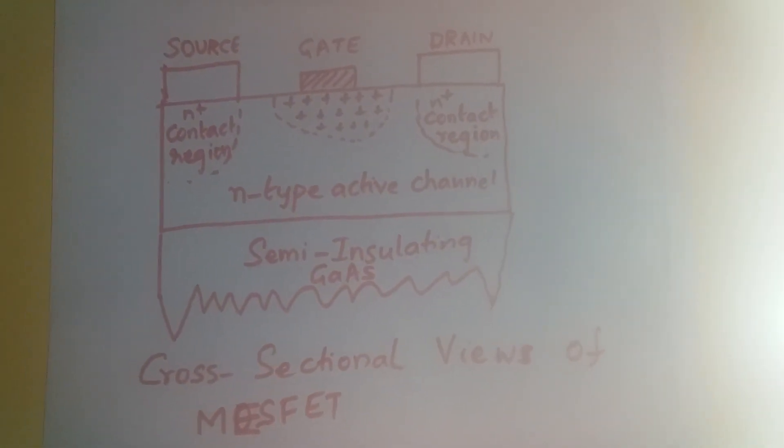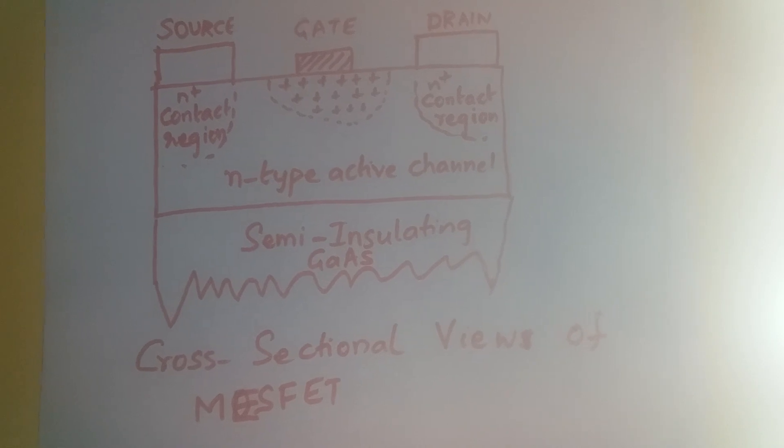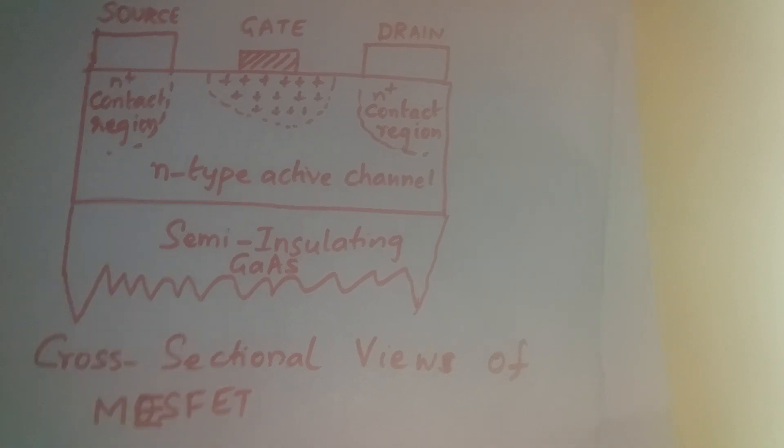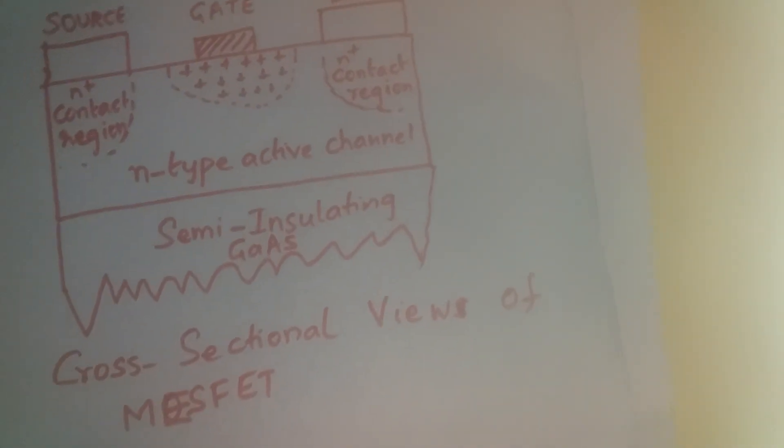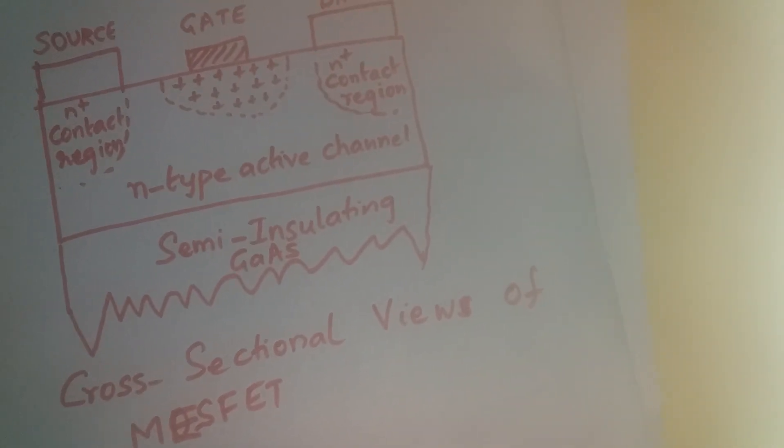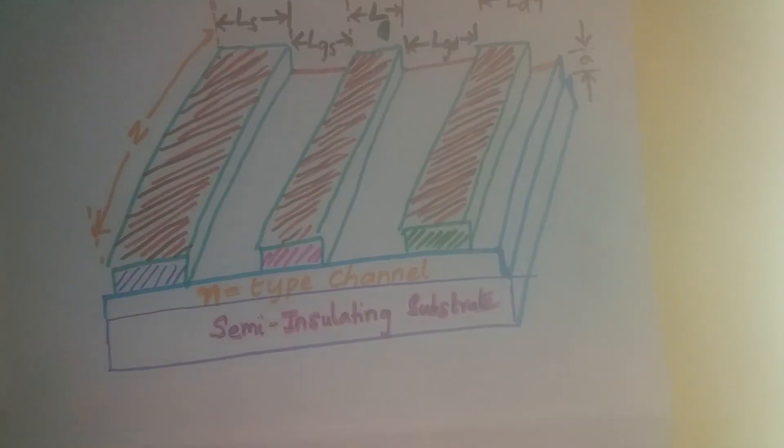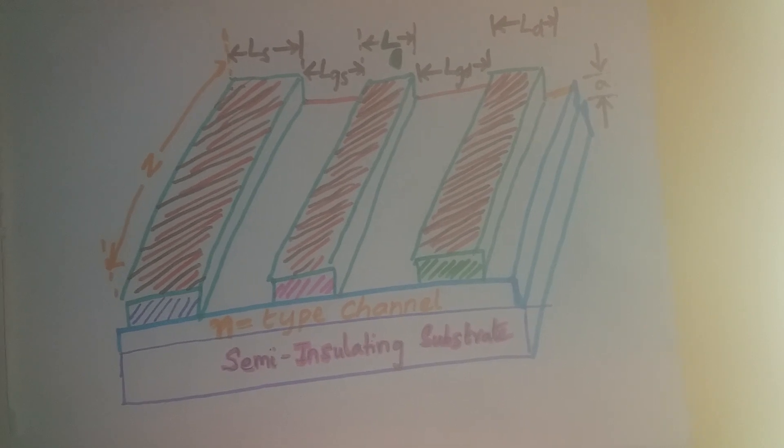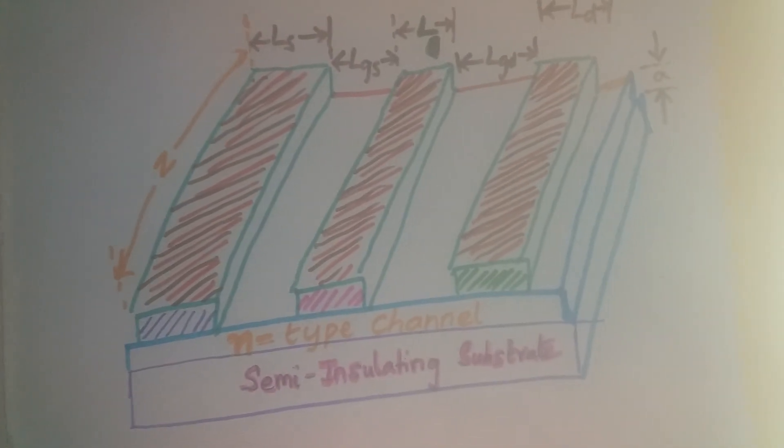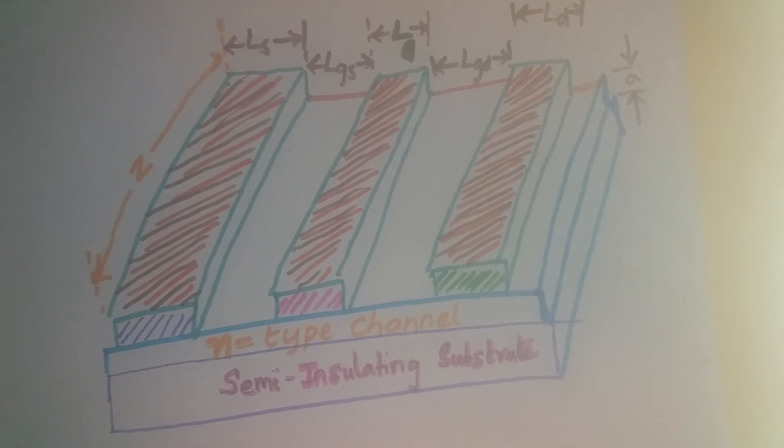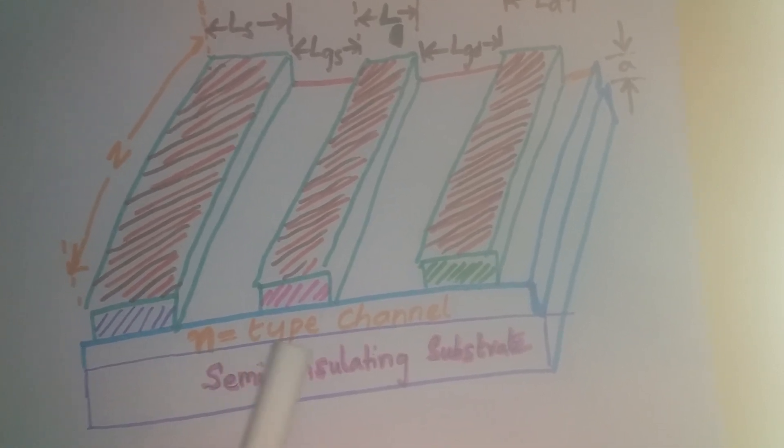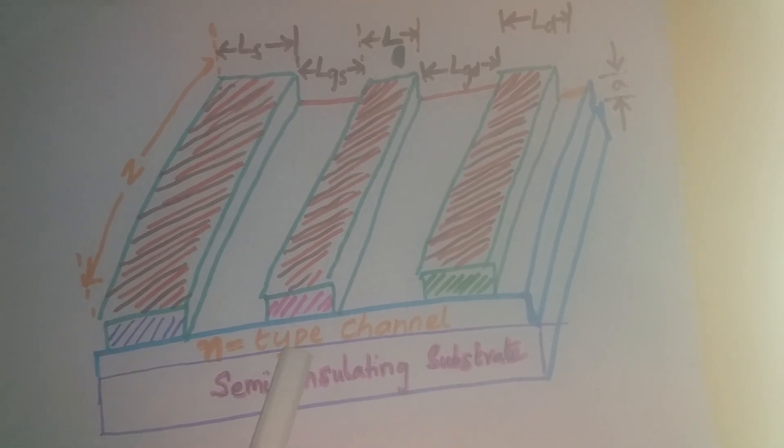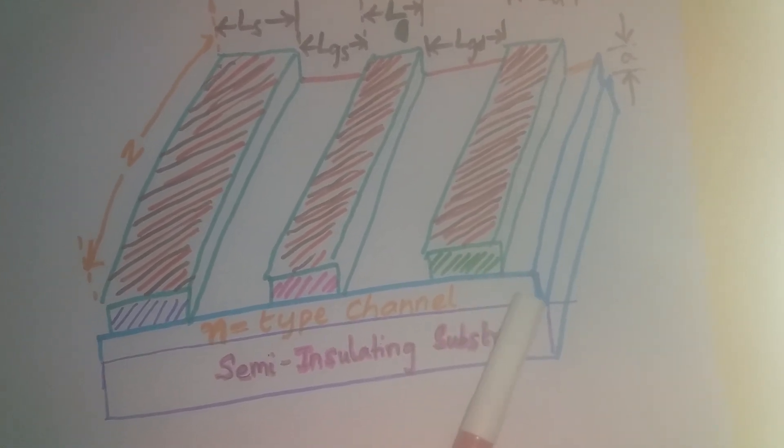Now let us have a look at the important dimensions of gallium arsenide MESFET. So here is the three-dimensional figure of a MESFET. You have a semi-insulating substrate, over that the N-type active layer is grown, and over that the three electrodes - source, gate and drain - are fabricated.